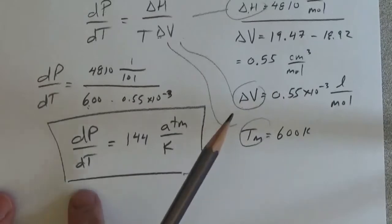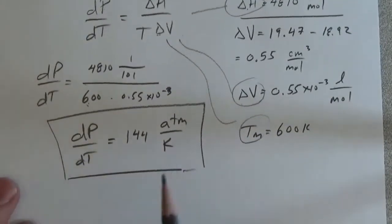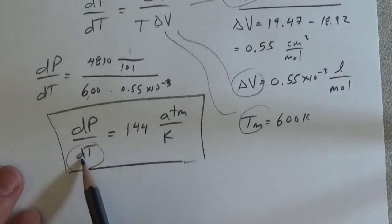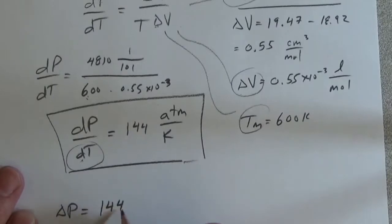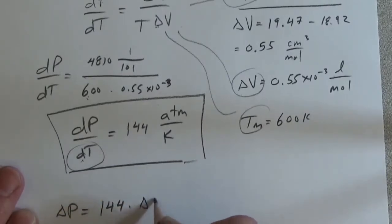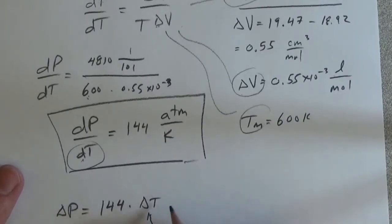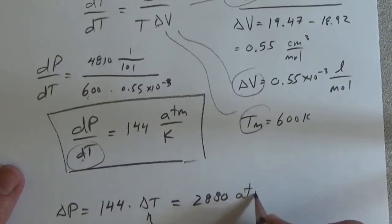So we can treat this as constant, which means that now we have delta T, so we can say delta P is equal to 144 times delta T, which is 20, or delta P is equal to 2880 atmospheres.